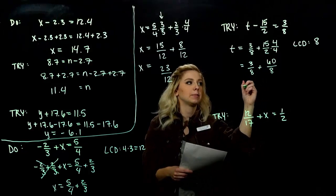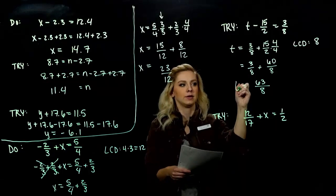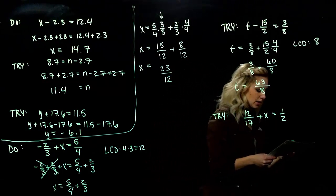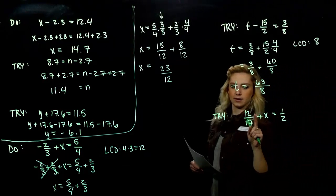So, t is 63 over 8. And we can't simplify. Alright. Last down here.